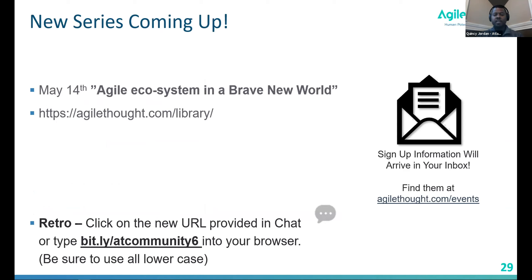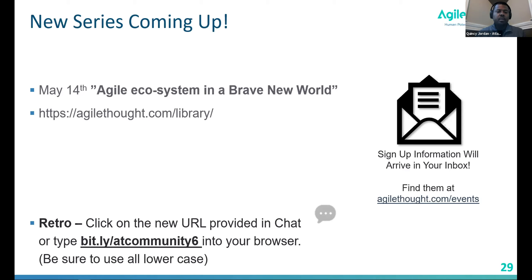We have a new series coming up called 'Agile Ecosystem in a Brave New World.' As things are opening up in states and cities, how is that going to affect our agile environments? Are we all going back to work, and if so, will it be the same? Will we have social distancing in the office? Will we do a hybrid? The forum next week will be on agile ecosystem in a brave new world.